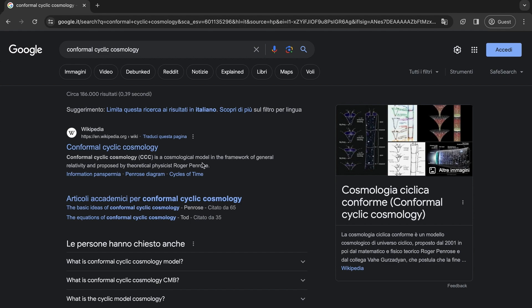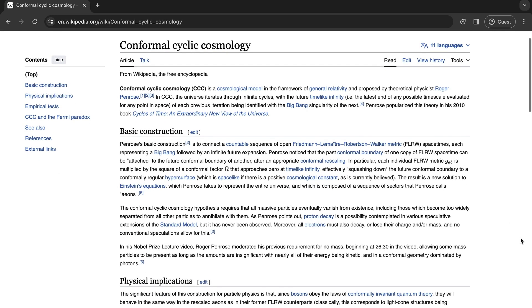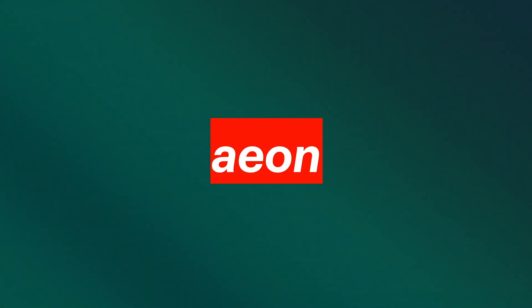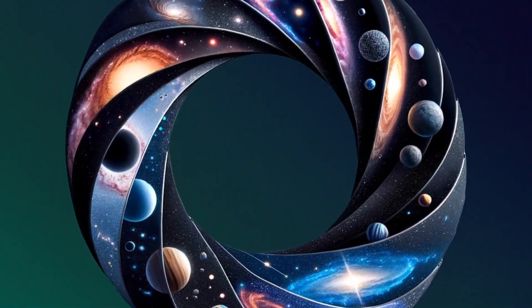Conformal cyclic cosmology, CCC, is a theory that offers a novel perspective on the universe's origin and ultimate fate. This theory stands as a radical departure from the conventional Big Bang model of cosmology. According to CCC, each individual universe, or Aeon, begins with its own Big Bang. In CCC, an Aeon is essentially one complete universe's life cycle. As each Aeon progresses, it expands.